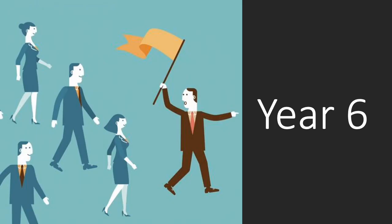We've looked at our artists in year three, our authors in year four, our scientists in year five, and now we are on to year six. We are going to be looking at Churchill, Mandela, and Pankhurst. Let's see how much you remember about each of these figures.